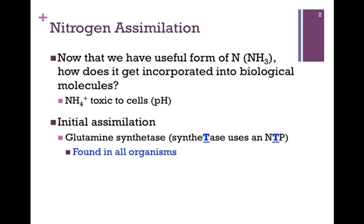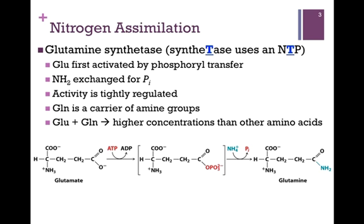Glutamine synthetase is so key that it is found in all organisms. Let's review that process of glutamine synthetase. First, the glutamate amino acid is activated by phosphoryl transfer. A phosphoryl group is transferred from ATP to the carboxyl group of glutamate to form the intermediate, the phosphorylated glutamate. This is an intermediate as noted by the brackets.